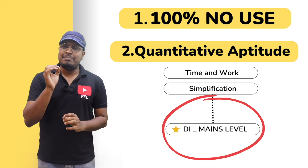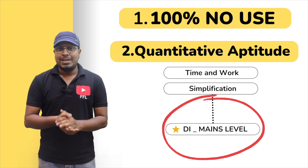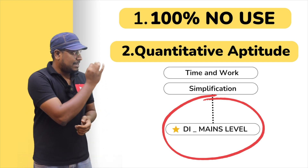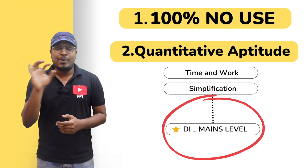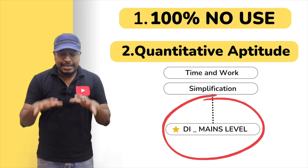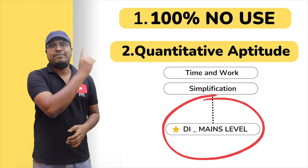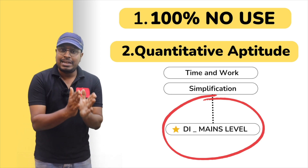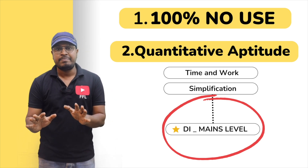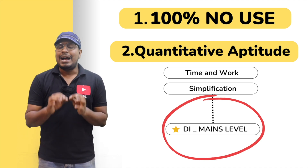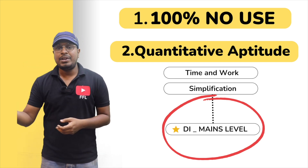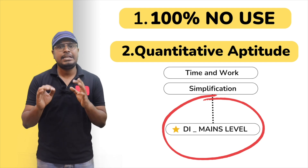Before watching this video, remember one important thing: the same data interpretation question I am going to teach now is available as a test. First visit my website or mobile application — in the quantitative aptitude section you can see at the last 'data interpretation' bracket. The same question I am going to teach is available as a test. First write the test, check your score whether you are getting 5 out of 5 or you can't understand the DI at all. After writing the test, come and watch this video for the solution.